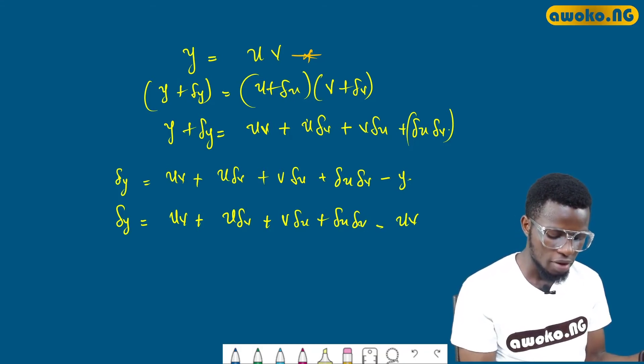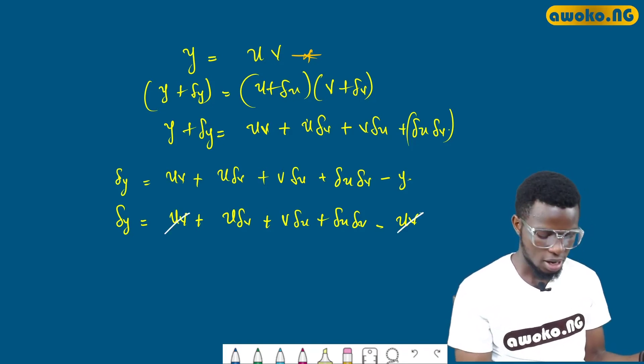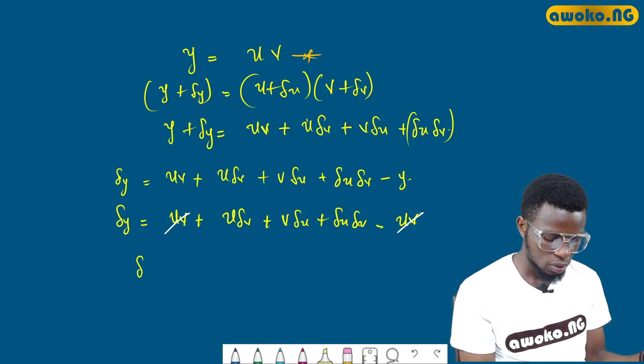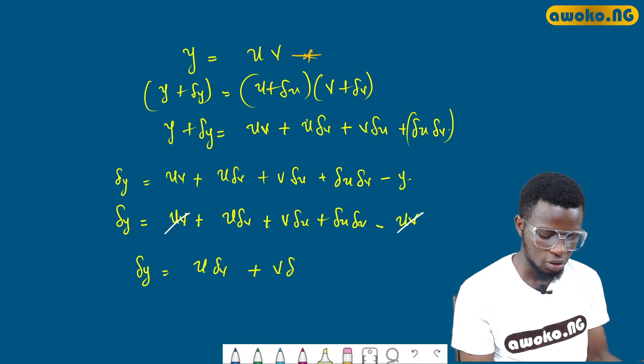Since we have minus uv plus uv, they can cancel out. And we will be left with dy equals u(dv) plus v(du) plus du(dv).